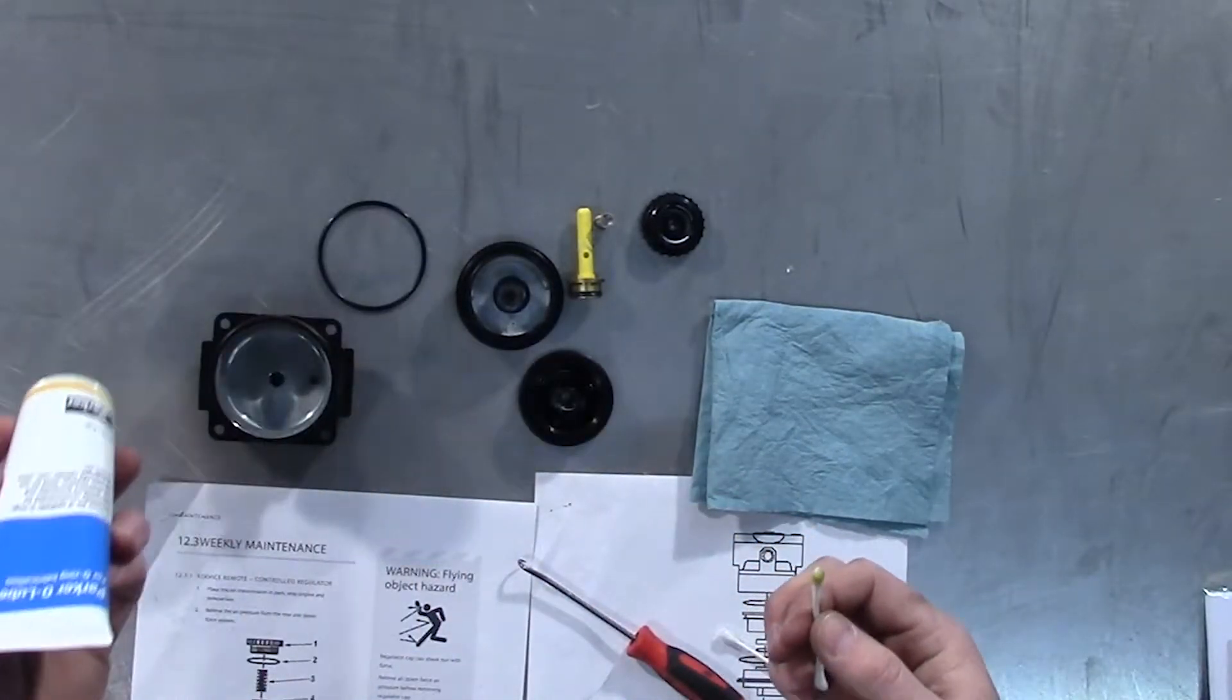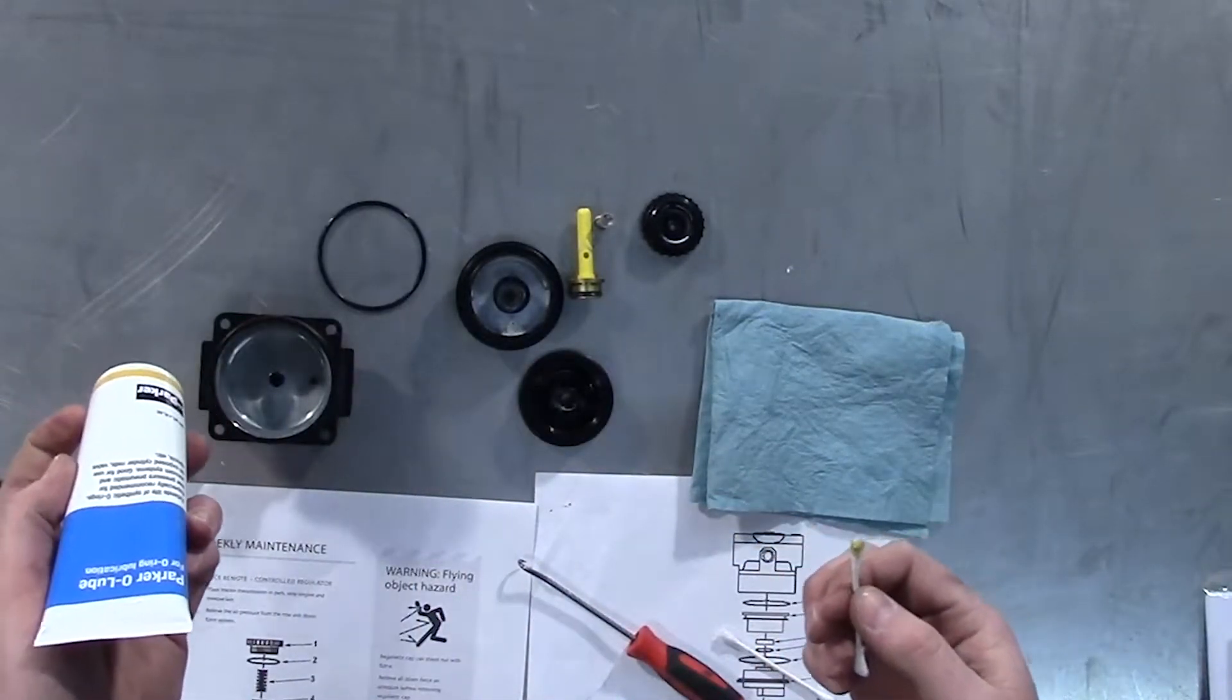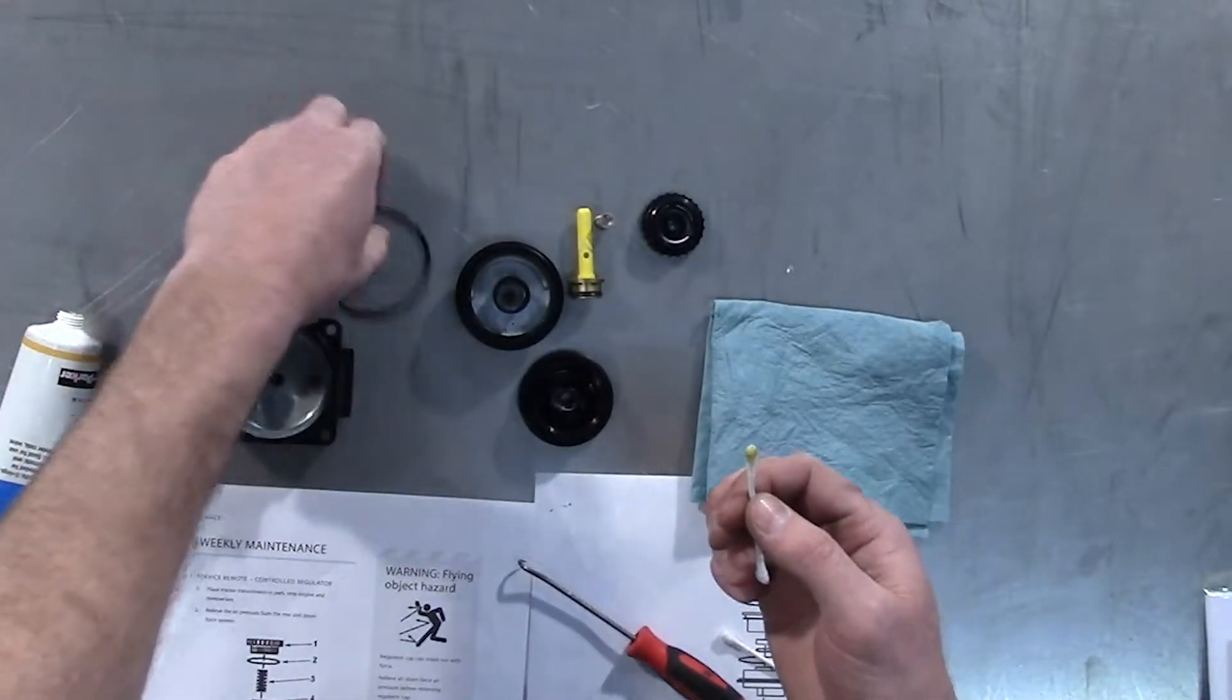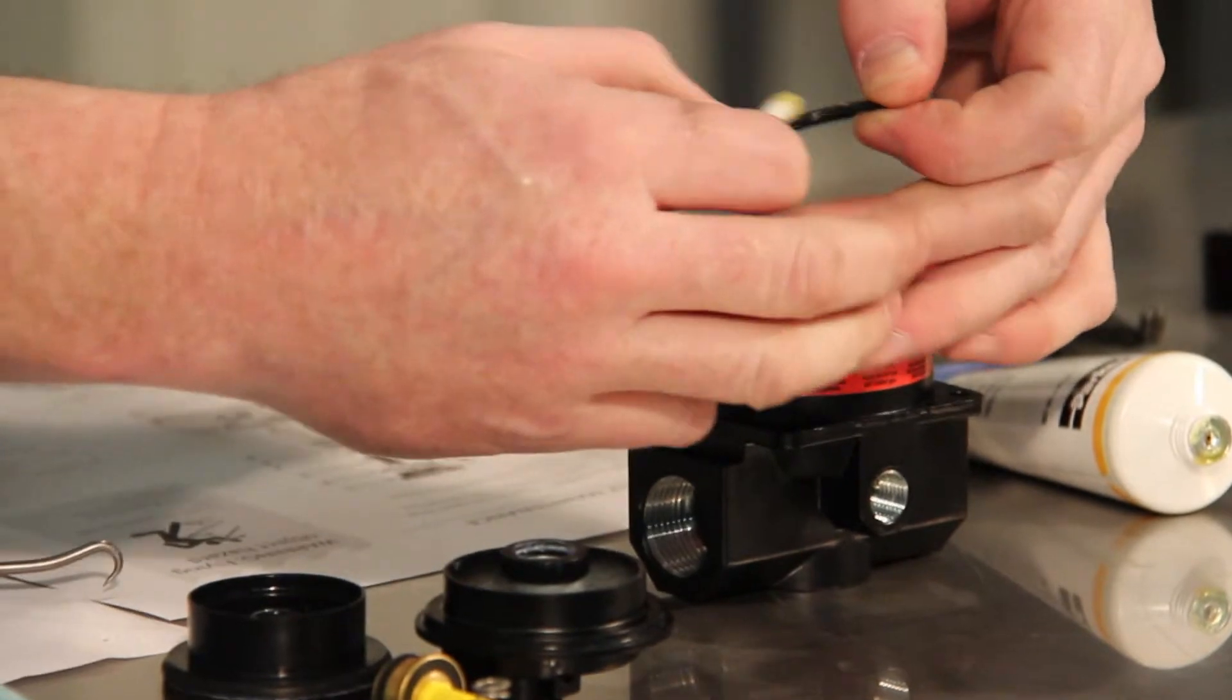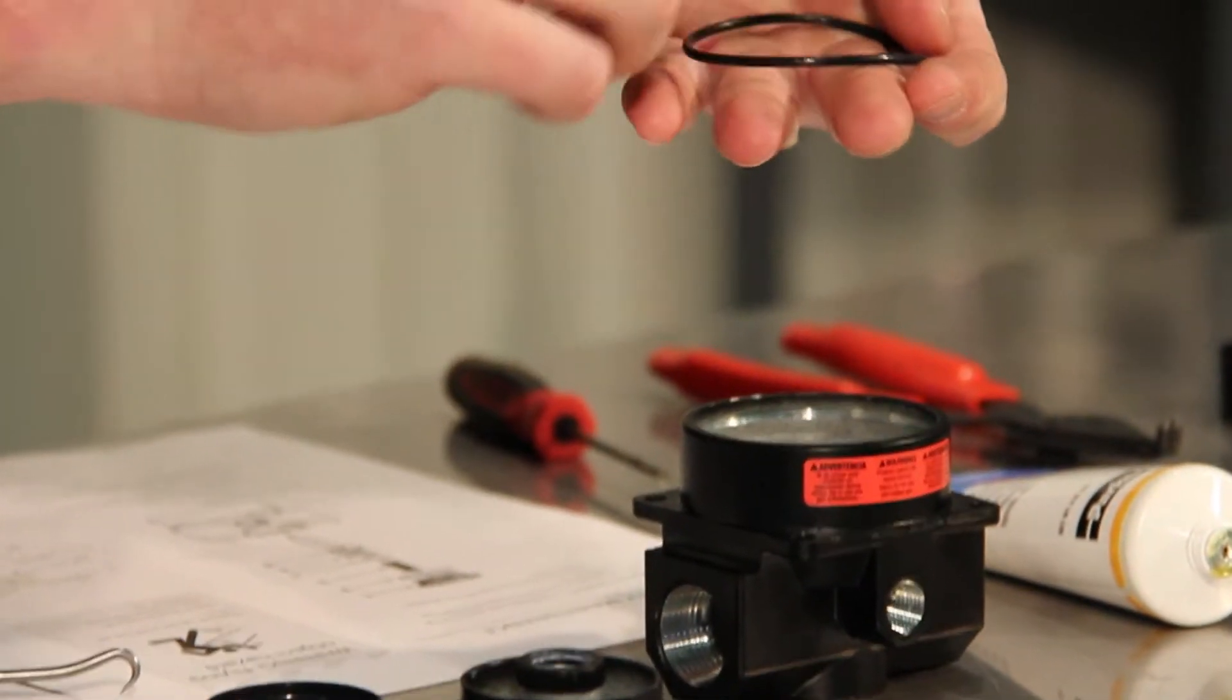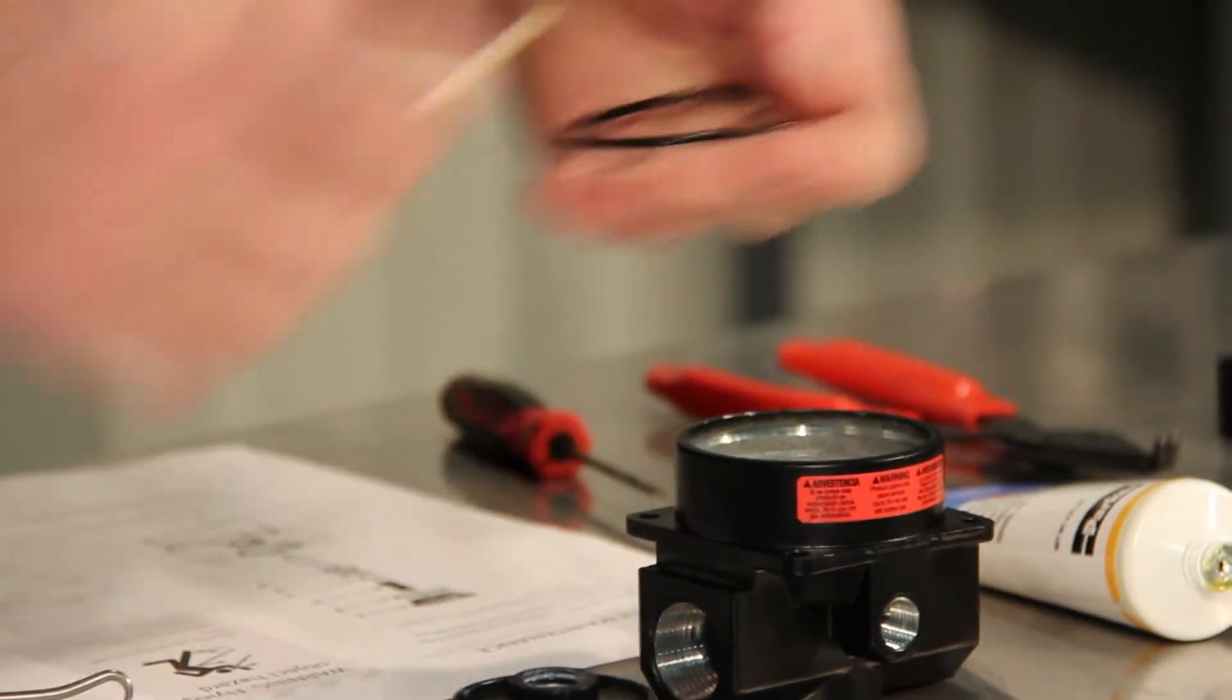This is Parker O-Ring Lube. This is what we recommend for all regulator assemblies and O-rings. Just want to put a generous coating of lubricant on the O-rings and the assemblies here.